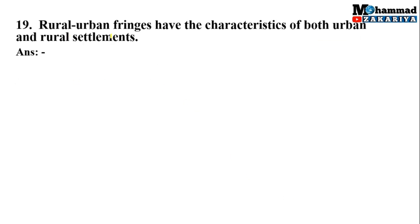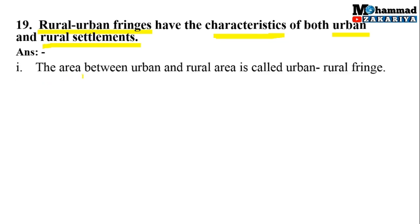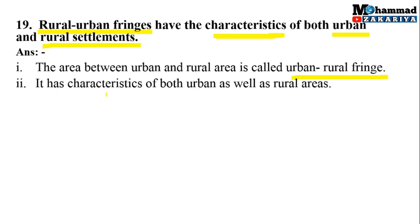Geographical reason number 19: Rural urban fringe has the characteristics of both urban and rural settlements. जो rural urban fringe के areas होते हैं, इनमें urban settlement के भी characteristics दिखाई देते हैं और rural settlement के भी दोनों एक साथ। Point number 1: The area between urban and rural area is called urban rural fringe. Point number 2: It has characteristics of both urban as well as rural areas, क्योंकि ये urban और rural area के between होने की वजह से इनमें दोनों के characteristics पाए जाते हैं।